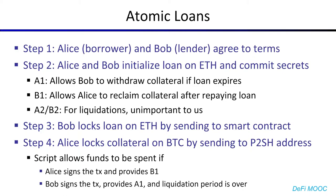After both parties have agreed, Alice and Bob initialize the loan using the same smart contract, and commit some secrets. Alice commits A1, which allows Bob to withdraw her collateral if the loan expires without being repaid, while Bob commits B1, which allows Alice to reclaim her collateral if she repays the loan. Alice and Bob also commit various A2 and B2 secrets, which are used for liquidations. By 'commit,' I mean that Alice and Bob submit hashed versions of the secret — not revealing the secret, just making it possible to prove they're giving the correct secret after the fact.